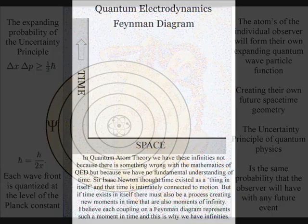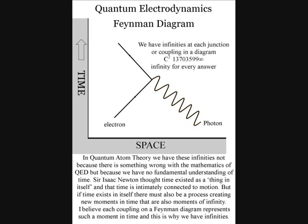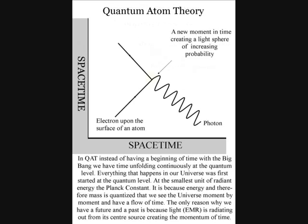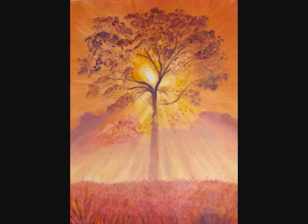This can explain the problem of mathematical infinities in quantum electrodynamics that can only be cancelled out in a process called renormalization. The calculations for each coupling on a Feynman diagram are infinite. In quantum atom theory, these infinities represent the continuous process of the time continuum, creating the infinity of space-time, and therefore there is no need for renormalization.